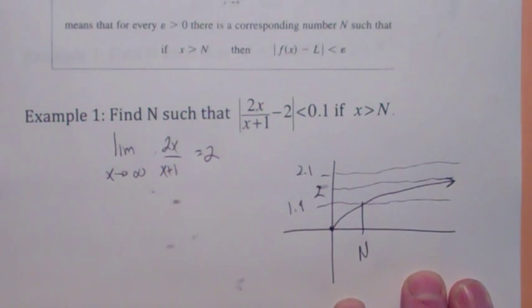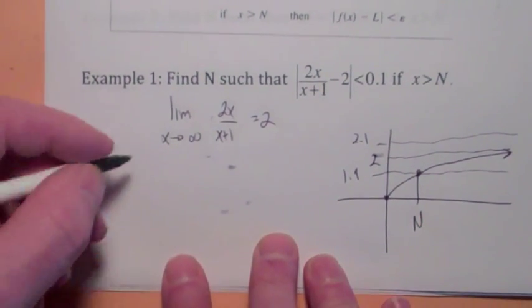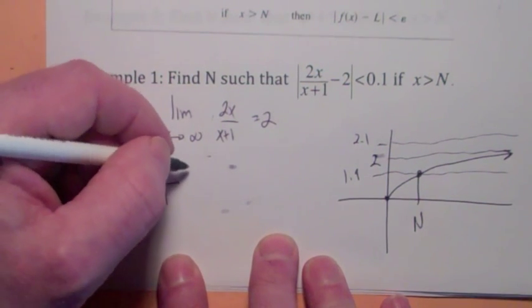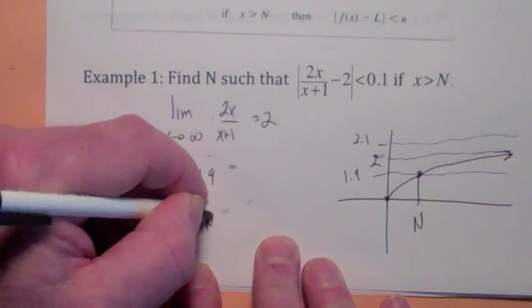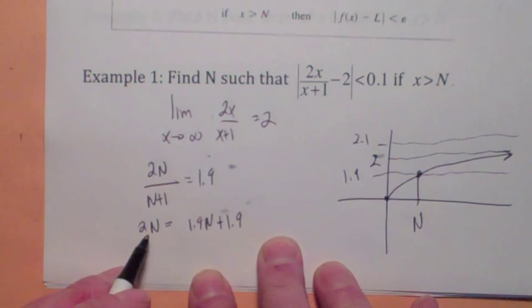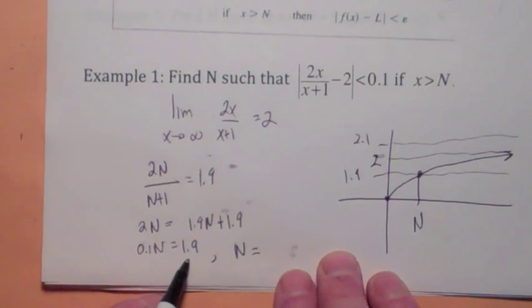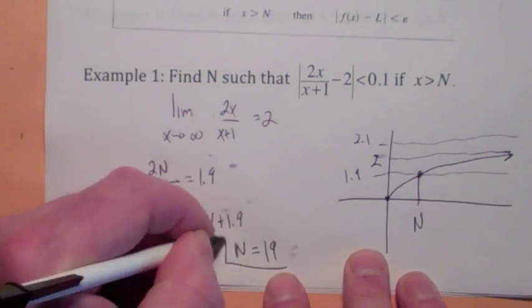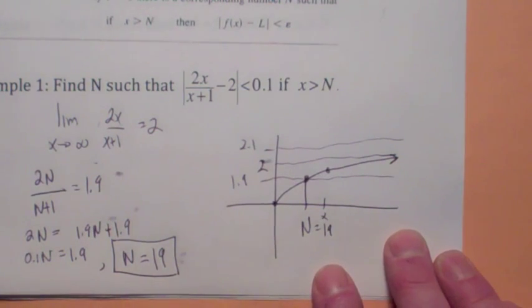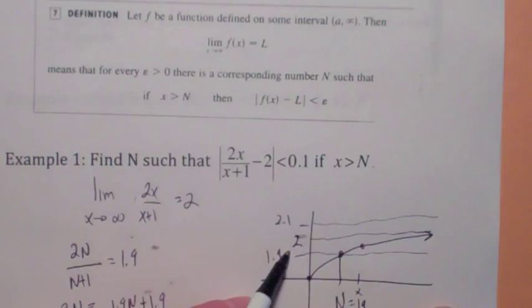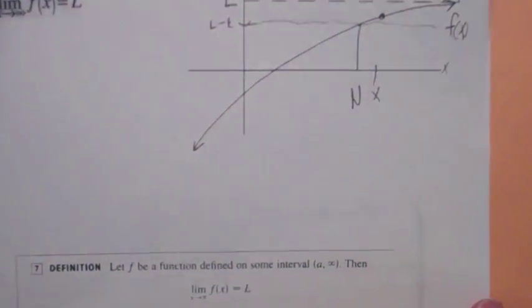What you want to do is find the cutoff value N. You know that f(N) has to equal 1.9, so 2N over (N+1) has to equal 1.9. Cross-multiplying gives 2N = 1.9N + 1.9. Subtracting 1.9N gives 0.1N = 1.9. Dividing by 0.1 gives N = 19. That means at N = 19, for this epsilon, if x is beyond that, the y value will always be in that band. The smaller the epsilon, the bigger N has to be.